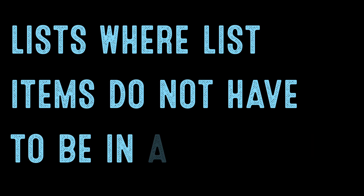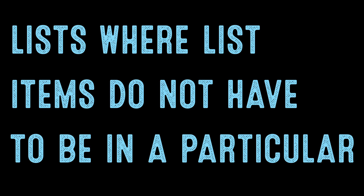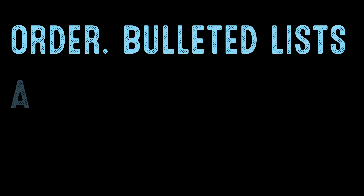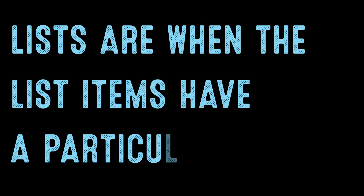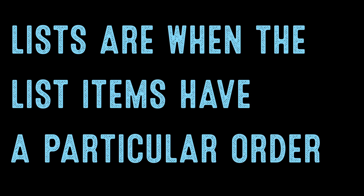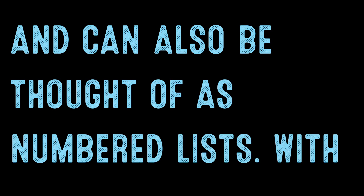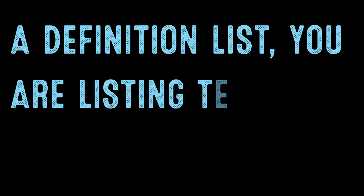Unordered lists are lists where the list items do not have to be in a particular order. Bulleted lists are unordered lists. In contrast, ordered lists are when the list items have a particular order, and can also be thought of as numbered lists.